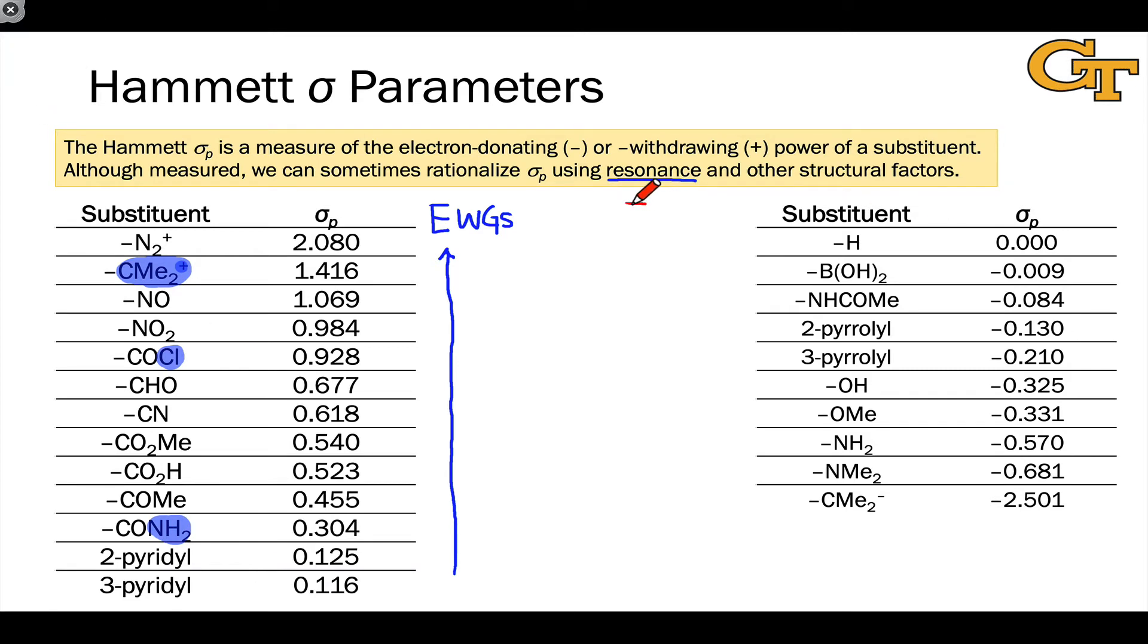While we can't always rationalize the sigma p value due to emergent effects associated with the fact that all of the bonds and atoms in all of these groups matter, we sometimes can, and in many cases, the sigma p value gives us structural insight. On the right-hand side here, we have groups that we would consider to be electron donating groups or electroneutral.